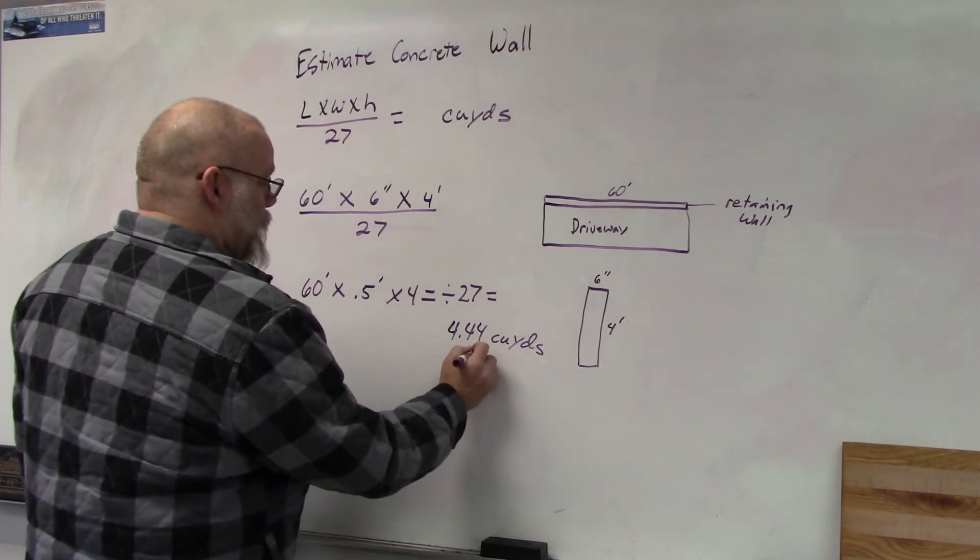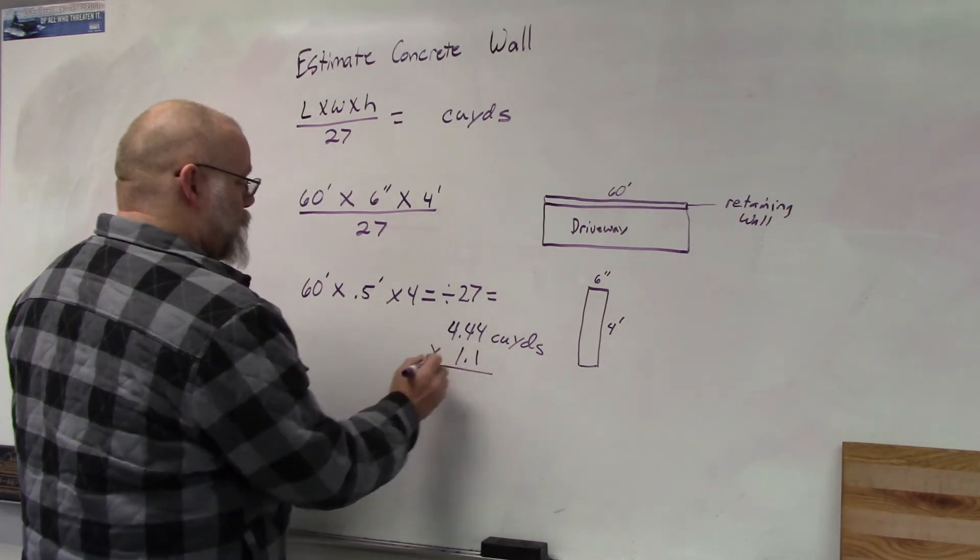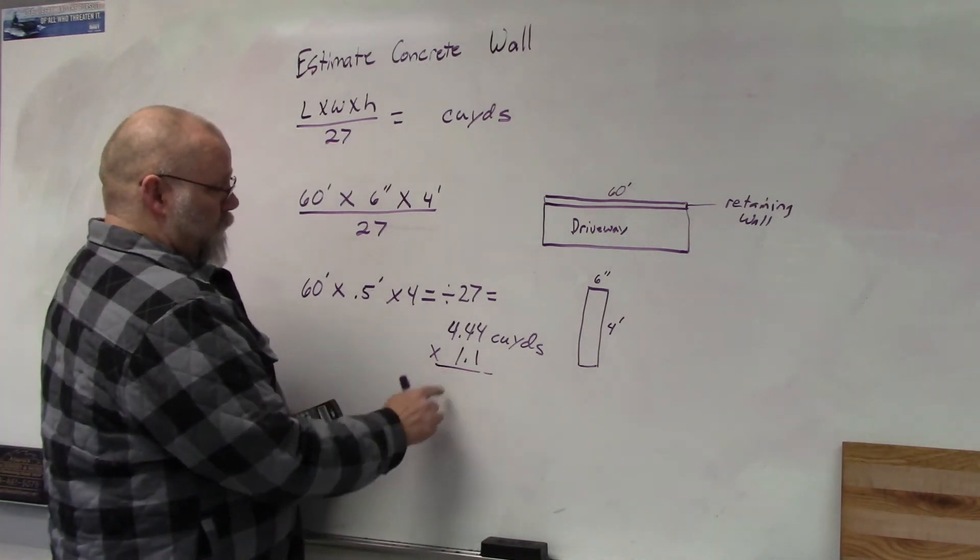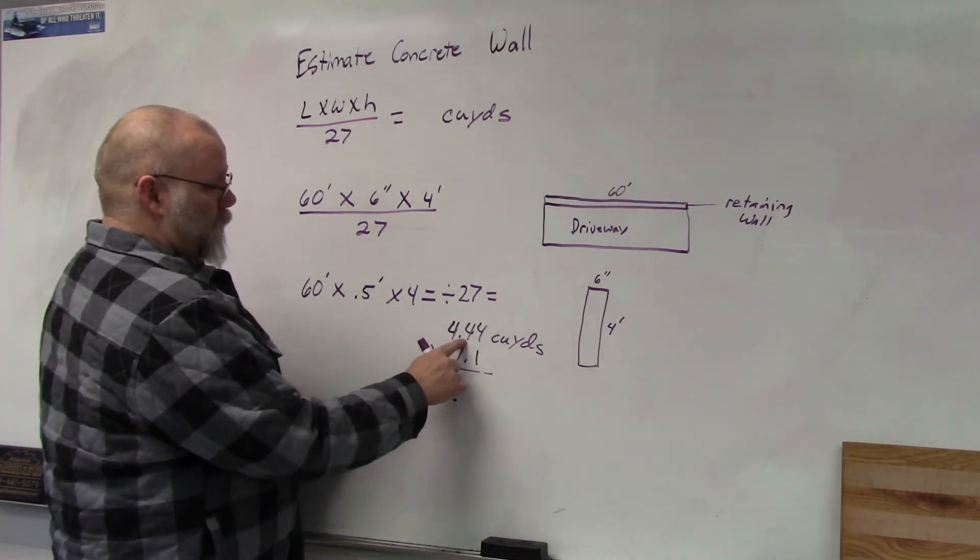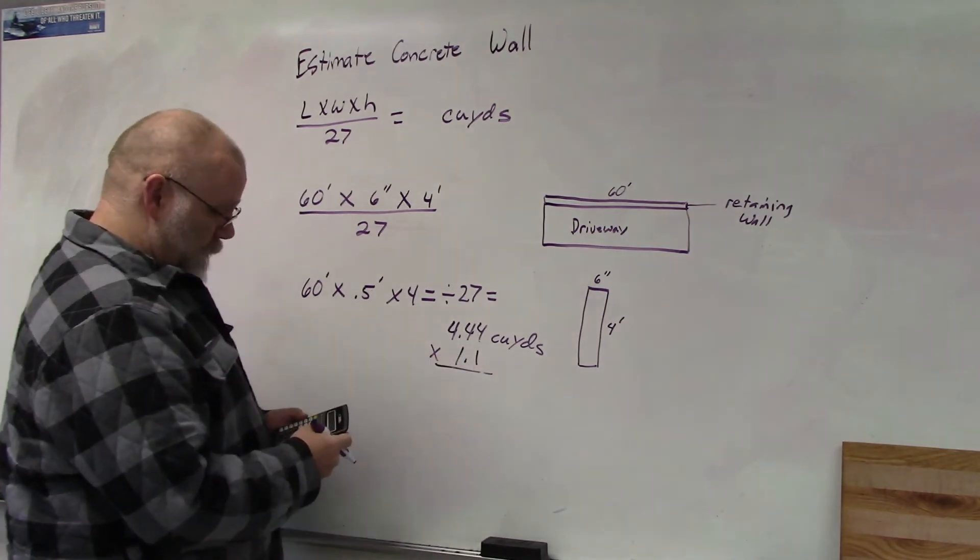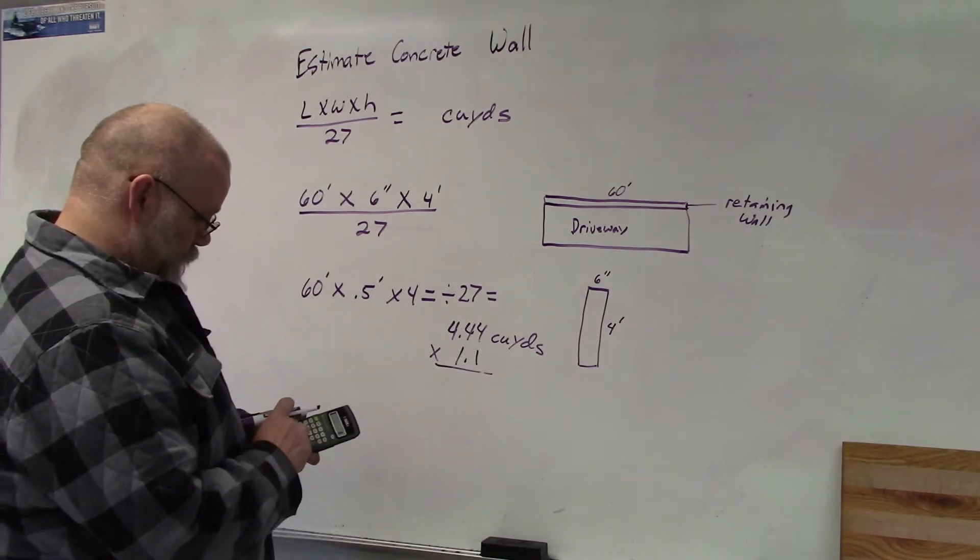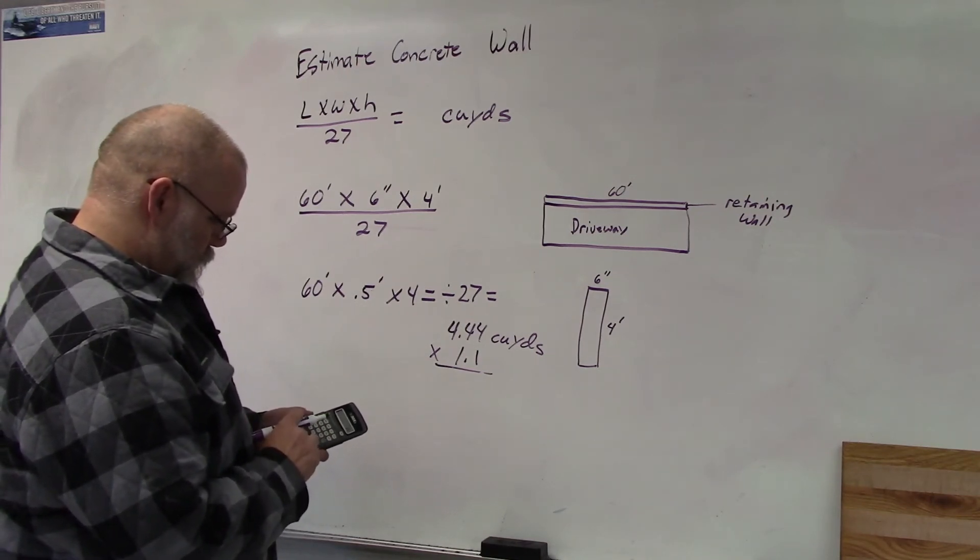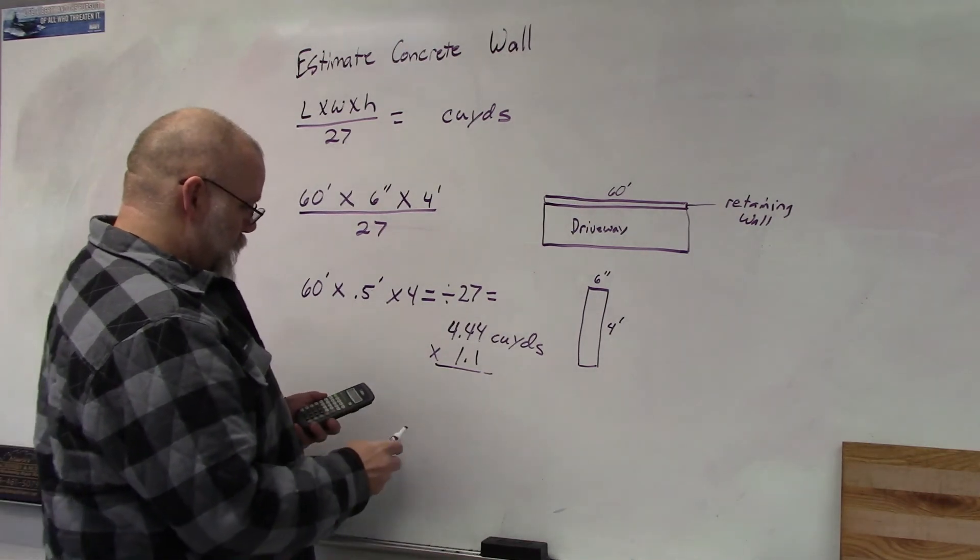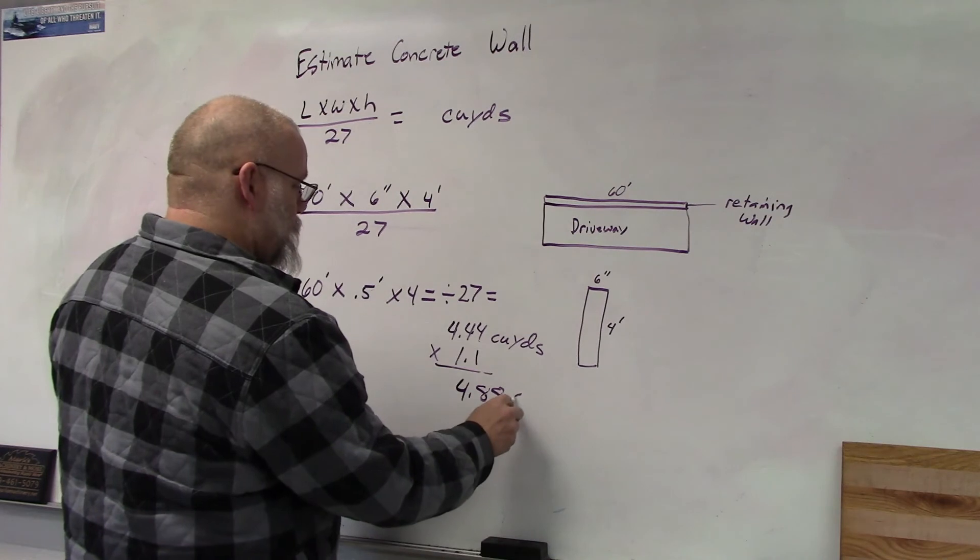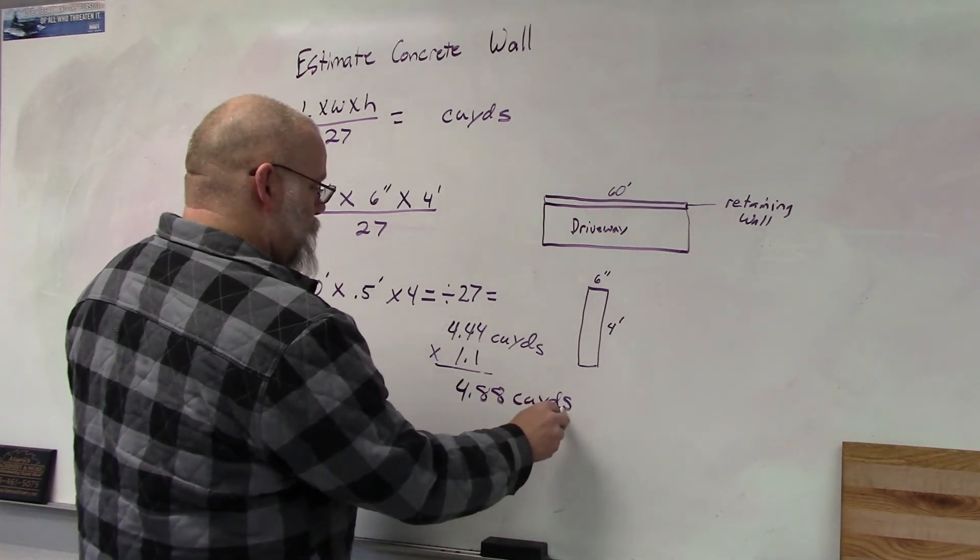Then we want to add some waste so we're going to multiply it times 1.1. So again, 1 is the 4.44 and the 0.1 will be the added waste. So our answer would be 4.88 cubic yards.